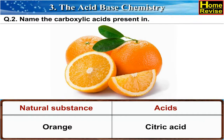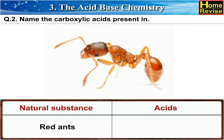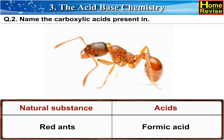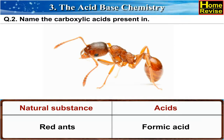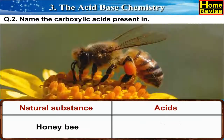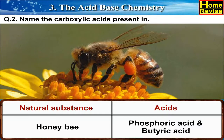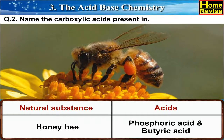Question 13. Red ants contain formic acid. Question 14. Honey bee contains phosphoric acid and butyric acid.